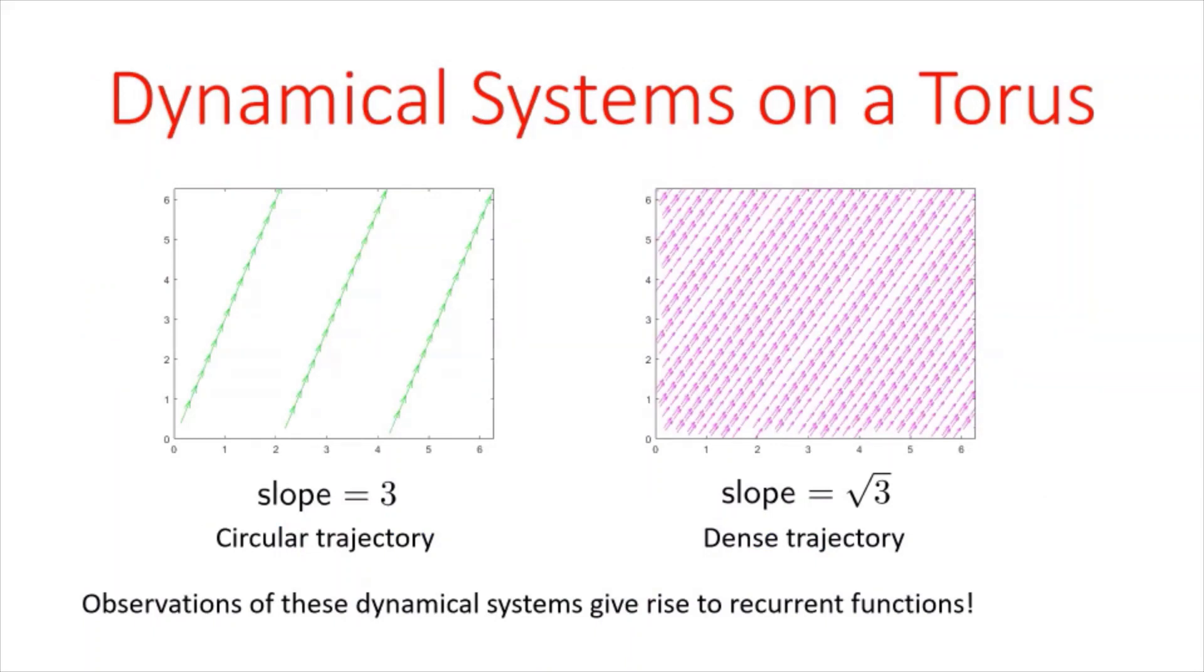For the remainder of the talk, I am going to focus on a particular manifold, in particular, the two torus. So the squares that you see on the screen are flat representations of a two torus, and I'm going to consider two dynamical systems. So on the left, in the green color, my dynamical system takes my point 0,0, across the manifold with the slope three, and you will see that it actually comes back to the origin.